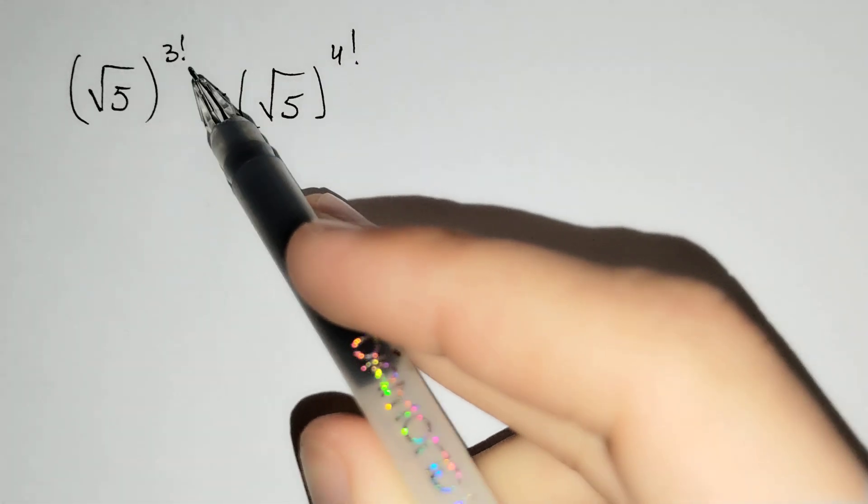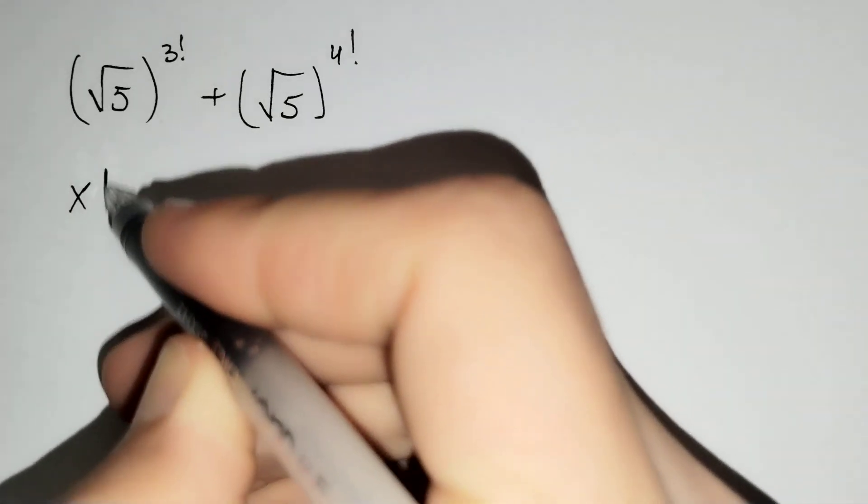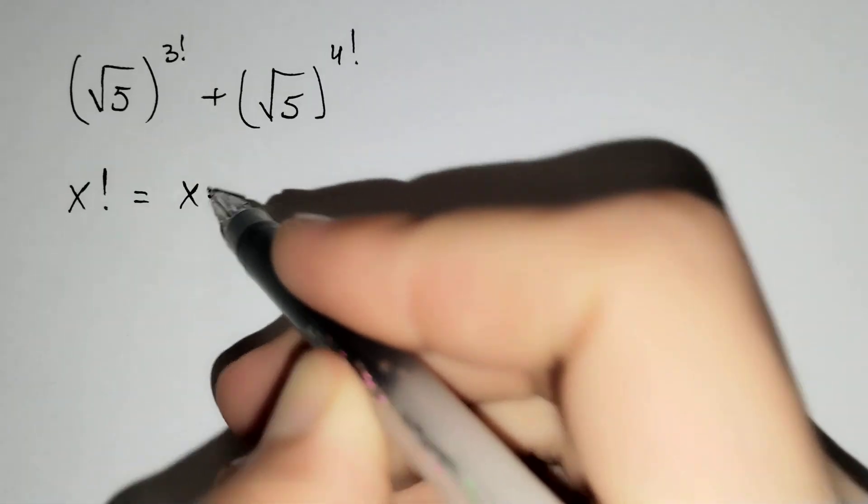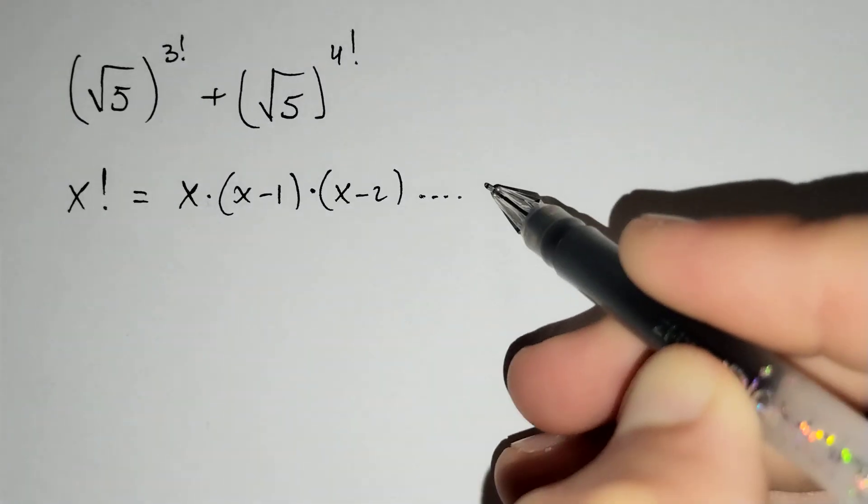Firstly, we should find 3 factorial and 4 factorial. x factorial equals to x times x minus 1 times x minus 2 and so on.